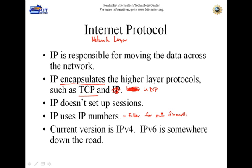The current version of IP that we're using is version 4. Version 5 is experimental. Version 6 is going to be the next thing we use whenever we're ready to convert the internet over to it.